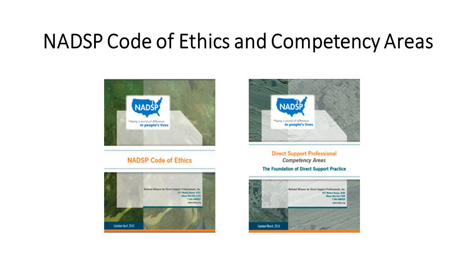We also thought it was important to have within our toolkit the road map that ANCOR and RTC worked with the National Alliance of Direct Support Professionals to develop — that's the Code of Ethics and competency areas. These are the latest and greatest; they were recently updated. We have direct links to those in our toolkit with NADSP's permission, and there's additional information about NADSP on the toolkit as well.